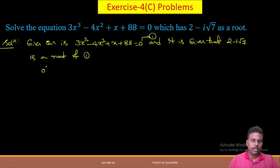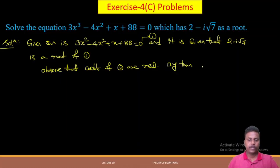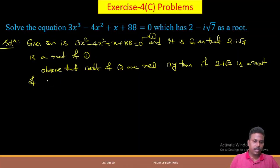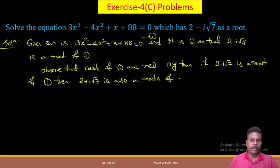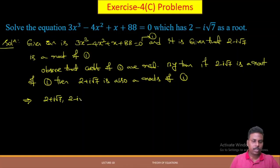The coefficients of this equation are real. By the theorem, since 2 − i√7 is a root, its conjugate 2 + i√7 is also a root of the equation.